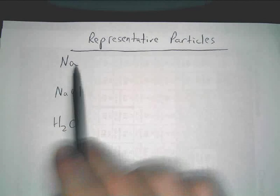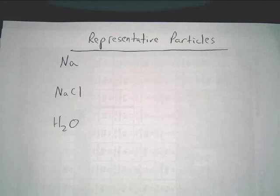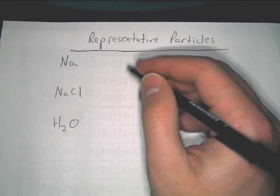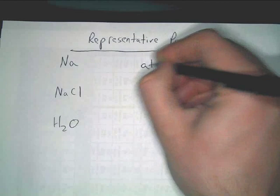Now first, what is the smallest unit of matter that we can break sodium down into while it still retains its properties? Na. Just sodium, an atom. Can you break a sodium atom down and still have it be sodium? No. So that is the smallest, and that's a representative particle. The smallest unit of matter that you can break something down into where it still retains its property. So the representative particle of sodium would be an atom.